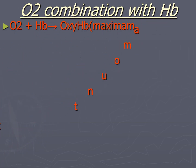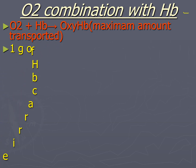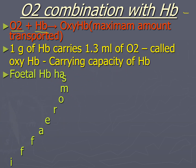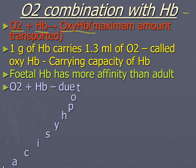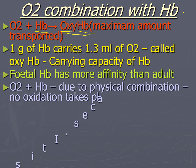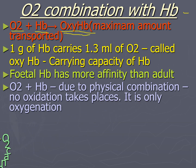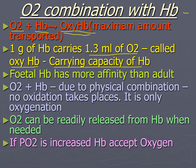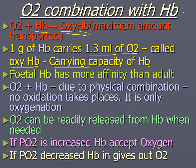After entering the blood from the alveolar air, most of the oxygen combines with hemoglobin to form a loose and reversible combination. This process is called oxygenation and converts hemoglobin into oxyhemoglobin. One gram of hemoglobin carries 1.34 ml of oxygen — this is called the oxygen carrying capacity of hemoglobin. The normal hemoglobin content in blood is 15 gram percent, so blood with 15 gram percent hemoglobin should theoretically carry 20 ml percent of oxygen.